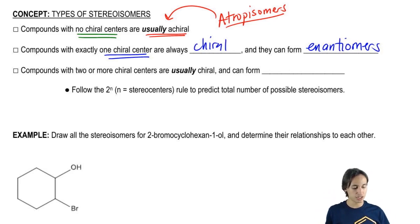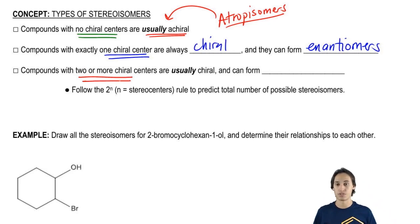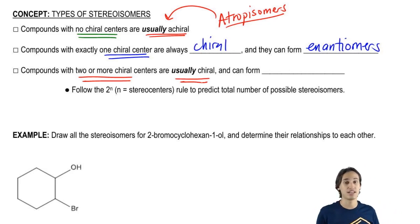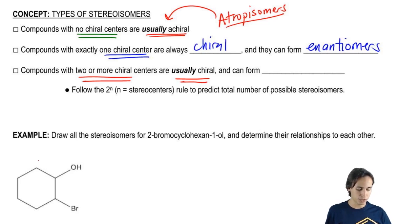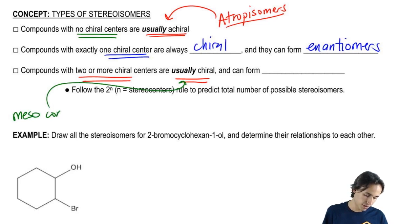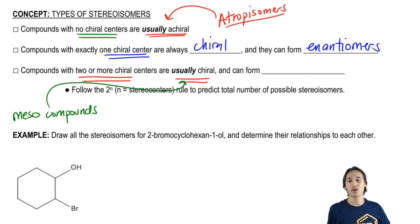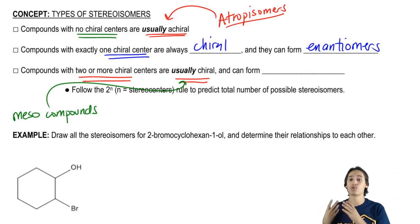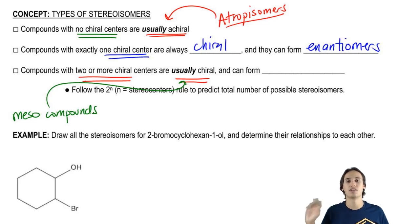Now let's talk about the last situation: what if you have two or more chiral centers? Those are going to be usually chiral. As I've been telling you, as long as you have chiral centers, assume that it's chiral. But there's also going to be an exception — the exception comes in the form of molecules called meso compounds. So except for atropisomers and meso compounds, these rules always hold: compounds with two or more chiral centers are going to be chiral unless they're meso.